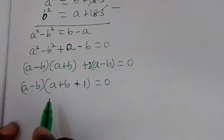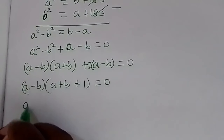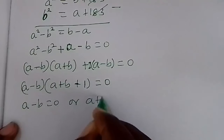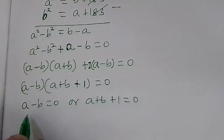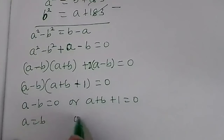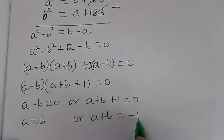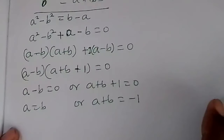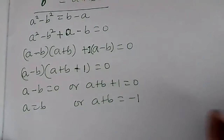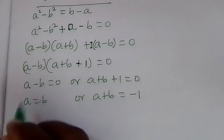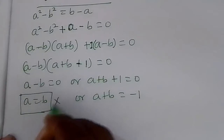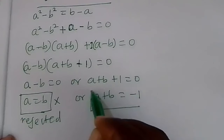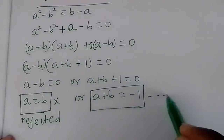By the zero product property, we have two factors: a minus p equals zero, or a plus p plus 1 equals zero. For the first case, a equals p. But there is a condition that a is not equal to p, so the first case is rejected.